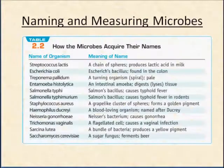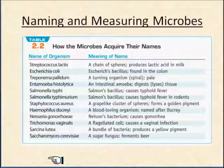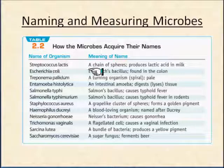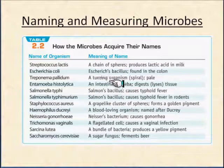How these names get applied has a little bit to do with the shape of the organism, what the organism does, the location it's found, and so forth. Looking at this table: Streptococcus lactis is a chain of spheres — all chains of spheres are streptococci — and it produces lactic acid. Escherichia coli is a bacillus found in the colon, thus 'coli.' Treponema pallidum is a twisting, turning spiral organism and it's pale, thus 'pallidum.'